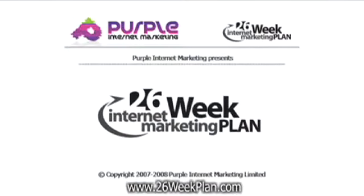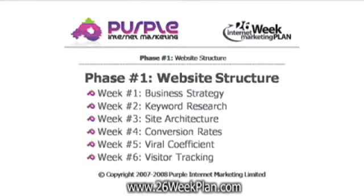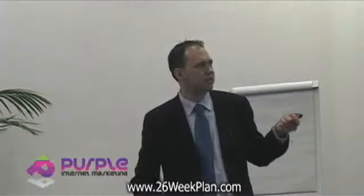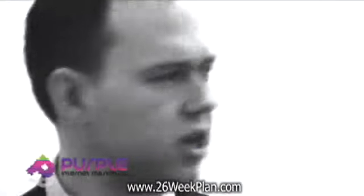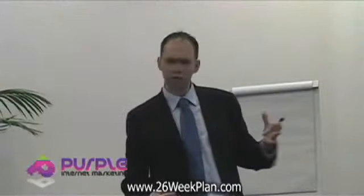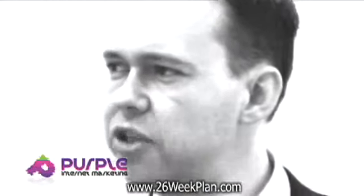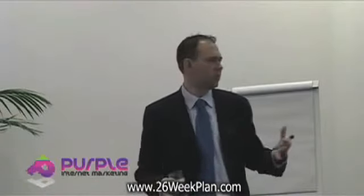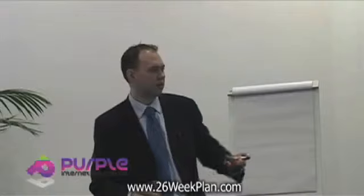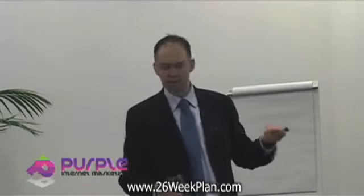Let's get going with the 26-week internet marketing plan. Phase one: website structure. This is really looking at business strategy, keyword research, site architecture, and conversion rates. It looks at your viral coefficient — your percentage of people likely to tell their friends about your site or certain services or PDF reports — and visitor tracking, so you can see what your visitors do and where they come from.